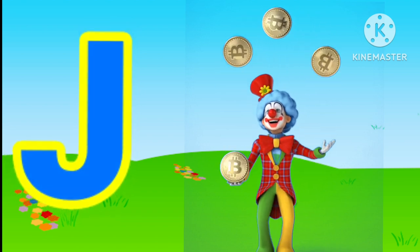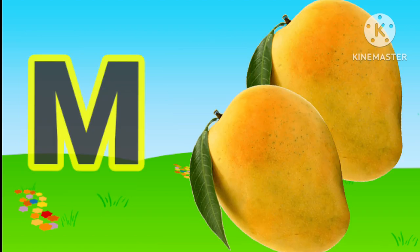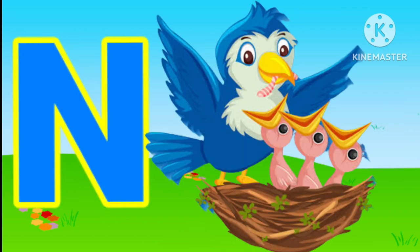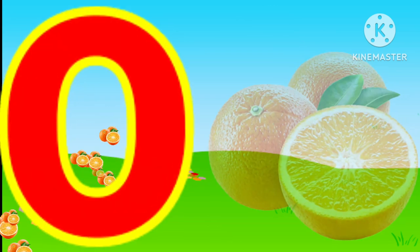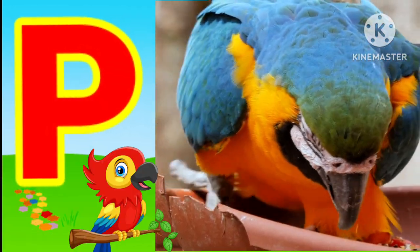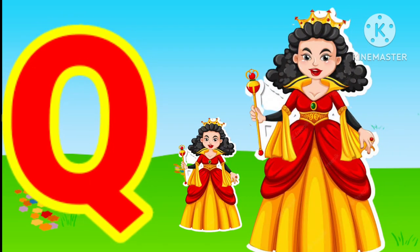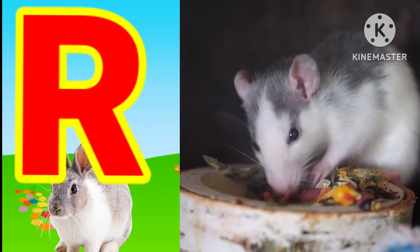J for joker, K for kite, L for lion, M for mango, M for nest, O for orange, B for parrot, Q for queen, R for left.